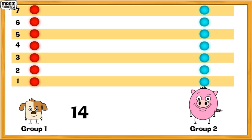So each one of us gets 7 lights. When we share 14 lights equally between two people, each one gets 7 lights. 14 divided by 2 gives 7.